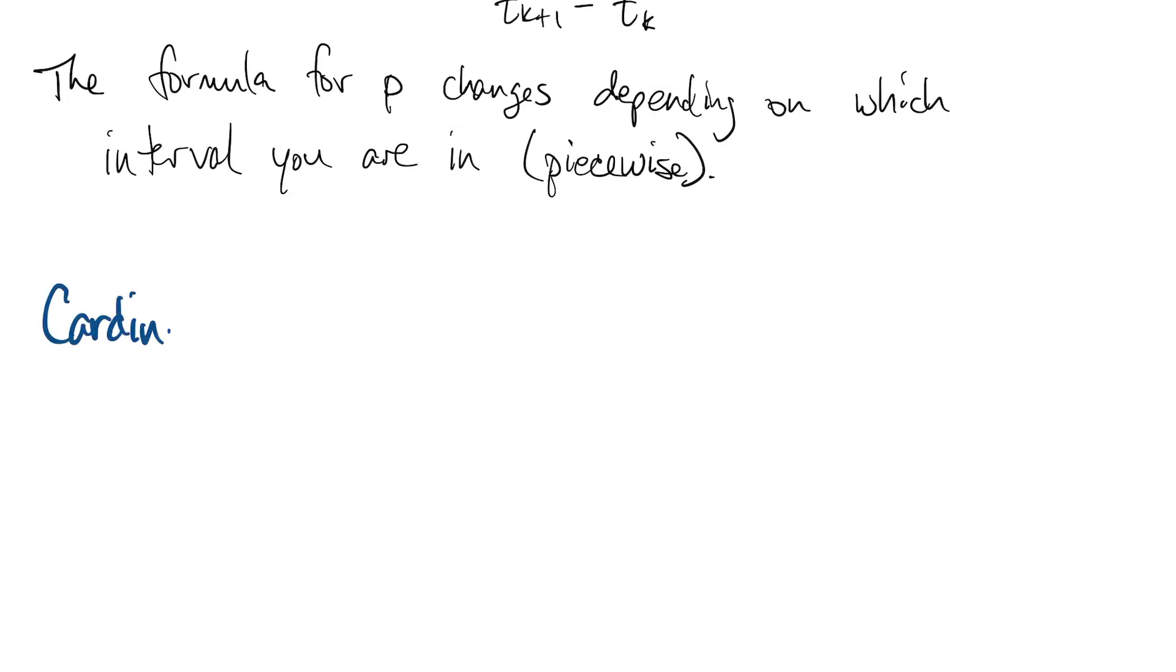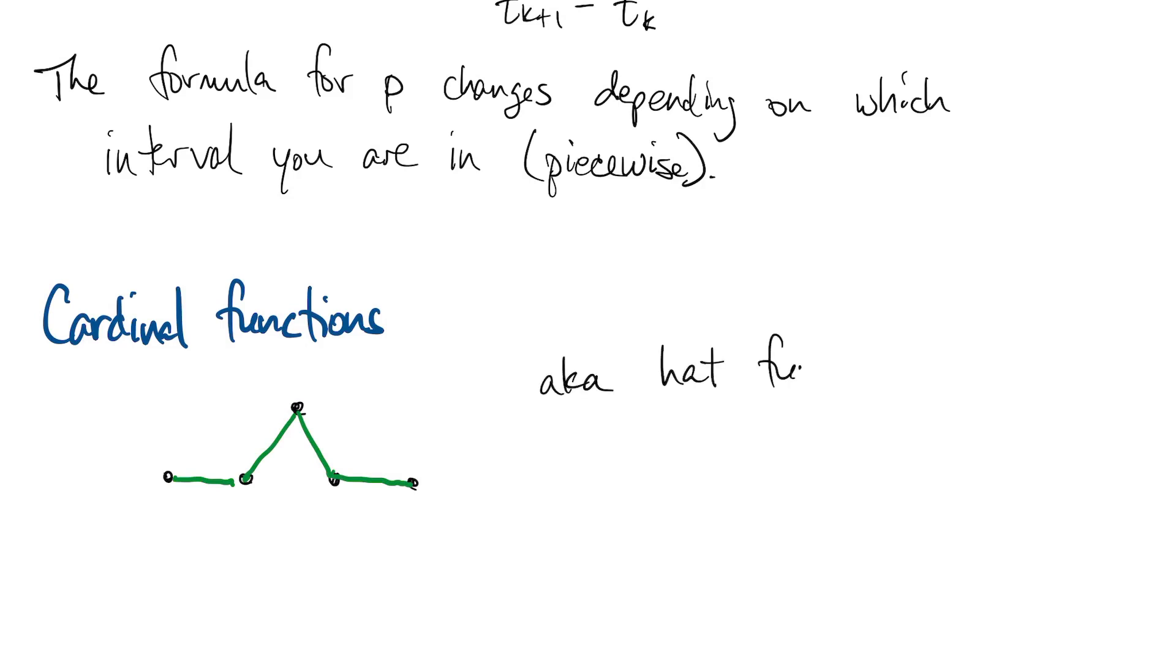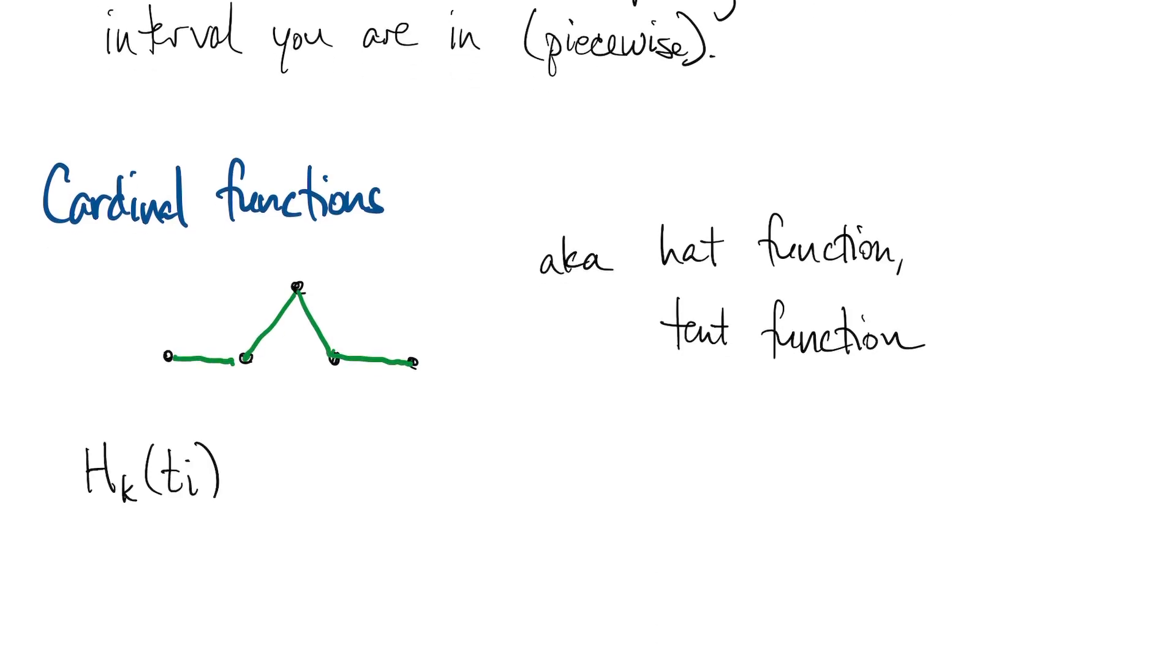In the last section, we took a look at the cardinal functions for piecewise linear interpolation. That's 1 at one node and 0 at the others. These are also called hat functions or tent functions for graphical reasons. The hat function is characterized by being 1 at node Tk and 0 at all the other nodes.